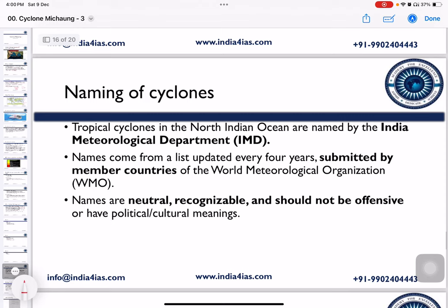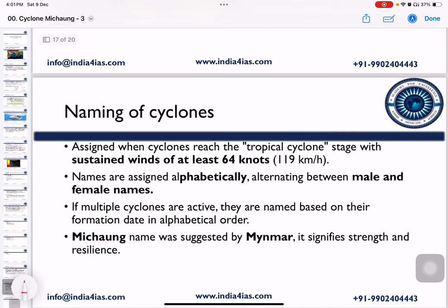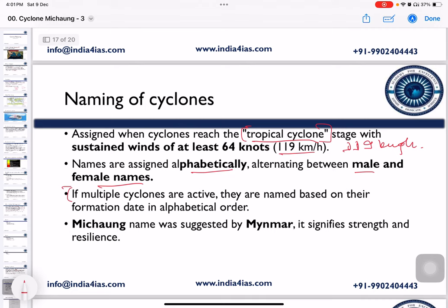Regarding the naming of cyclones in the Northern Indian Ocean, names are assigned by IMD and the list is updated every four years. Names are submitted by member countries of the World Meteorological Organization in the Indian Ocean region. The criteria are that names should be neutral, recognizable, and not offensive or carry any political or cultural meanings. Names are assigned only when a cyclone's speed exceeds 119 km per hour, assigned alphabetically alternating between male and female names. If multiple cyclones are active, names are assigned based on formation date in alphabetical order. The name 'Michon' was suggested by Myanmar and signifies strength and resilience.